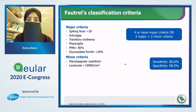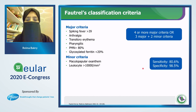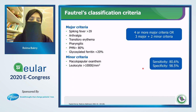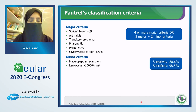The Fautrel classification criteria had a specificity of 98% with a lower sensitivity of 80%. It requires four or more major criteria, or three major and two minor, and this is the only criteria that has pharyngitis as a major criteria.